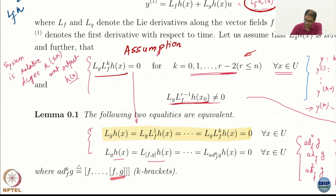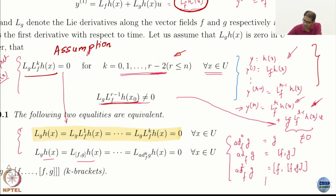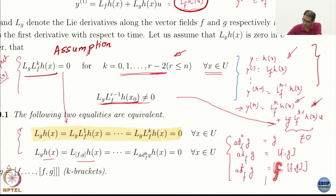ad_f^k g is basically k brackets. ad_f^0 g is just g itself. ad_f^1 g is the Lie bracket [f, g]. ad_f^2 g is the Lie bracket of f with [f, g]. It is a successive Lie bracket notation.